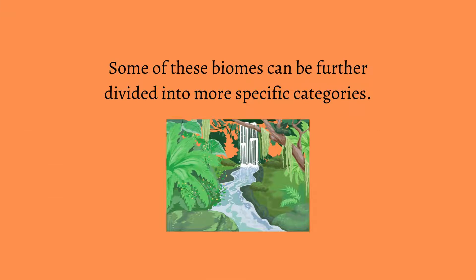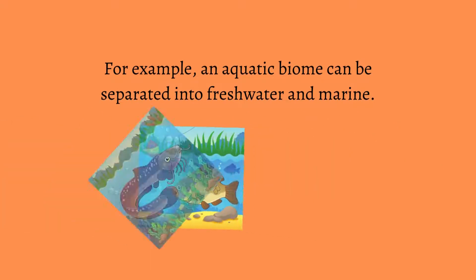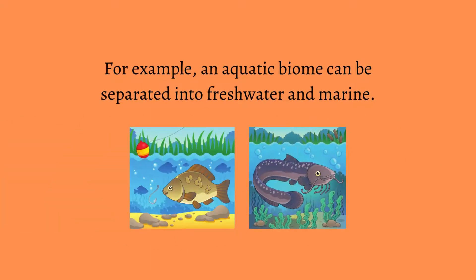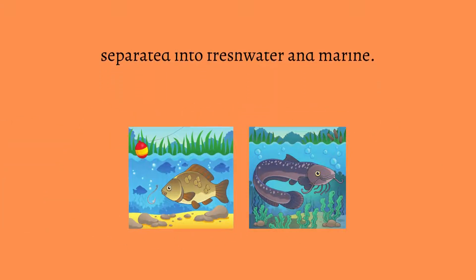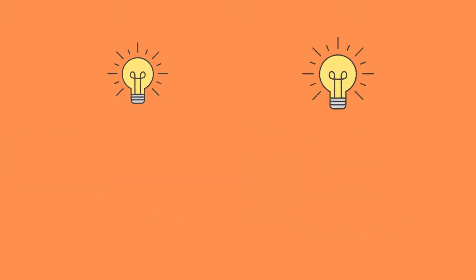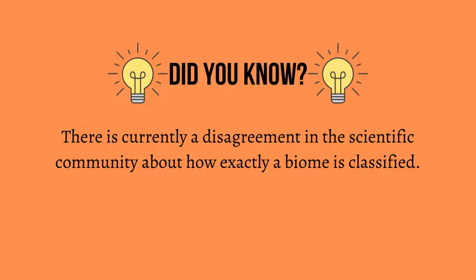Some of these biomes can be further divided into more specific categories. For example, an aquatic biome can be separated into freshwater and marine. Did you know? There is currently a disagreement in the scientific community about how exactly a biome is classified.